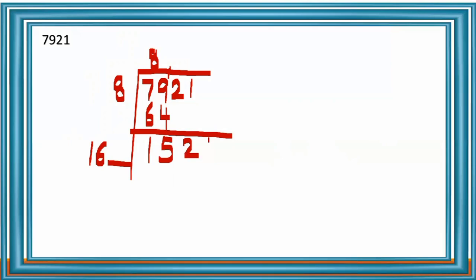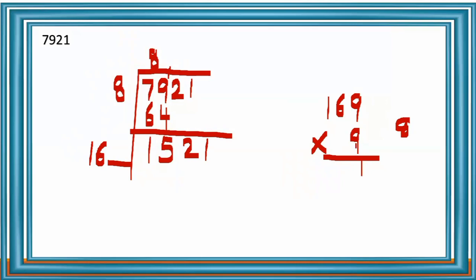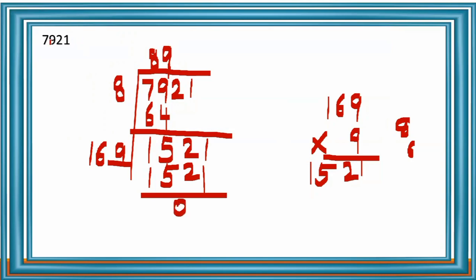Bring down the next two digits 21, giving 1521. At the right side of 16, which digit fits? Try 9: 169 × 9. Check: 9 × 9 = 81, write 1, carry 8; 6 × 9 = 54 plus 8 = 62, write 2, carry 6; 1 × 9 = 9 plus 6 = 15. So 169 × 9 = 1521 — exact. Write 9 at the right side of 16 and in the quotient place. 1521 minus 1521 = 0. The square root of 7,921 is 89.